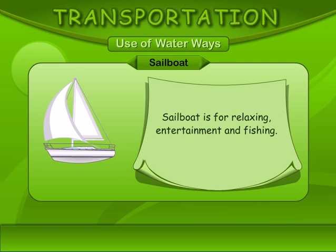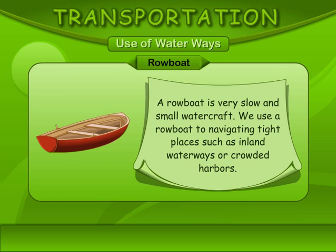Sailboat. A sailboat is for relaxing, entertainment, and fishing. Rowboat. A rowboat is a very slow and small watercraft. We use a rowboat to navigate tight places such as inland waterways or crowded harbors.